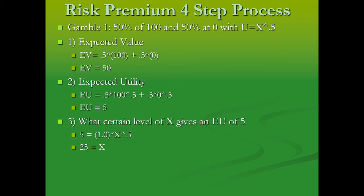Step three is finding the certainty equivalent. We take the expected utility from the gamble of 5, set it equal to the utility of a certain amount X, where U(X) = X^0.5. Solving for X, the certainty equivalent is 25.